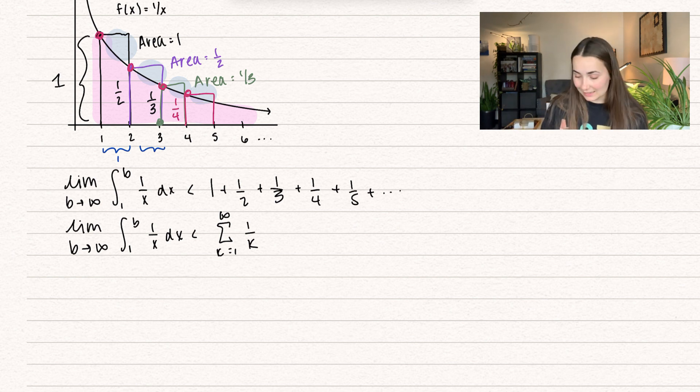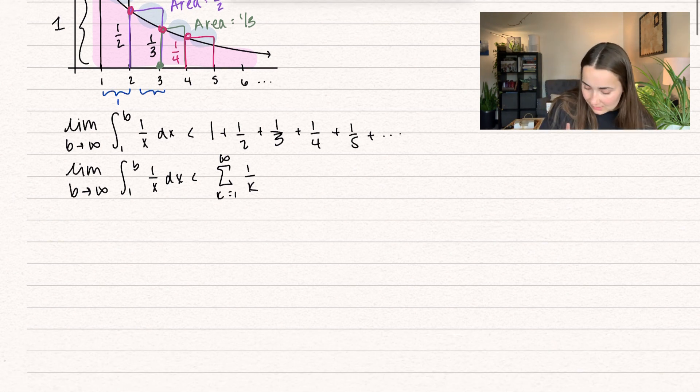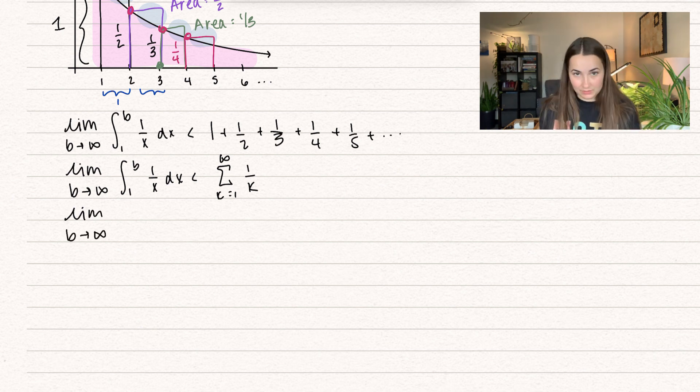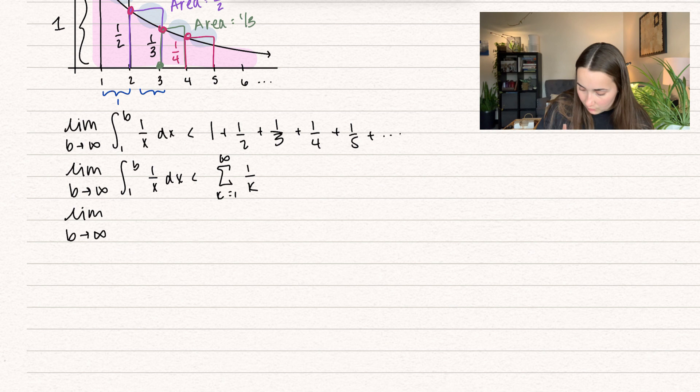Now, we can actually evaluate this limit on the left side. So let's take the limit as b approaches infinity, and we can take the antiderivative of that. So the integral of 1 over x is going to be natural log of x evaluated between 1 and b, and this is going to be less than the harmonic series, k equals 1 to infinity of 1 over k.